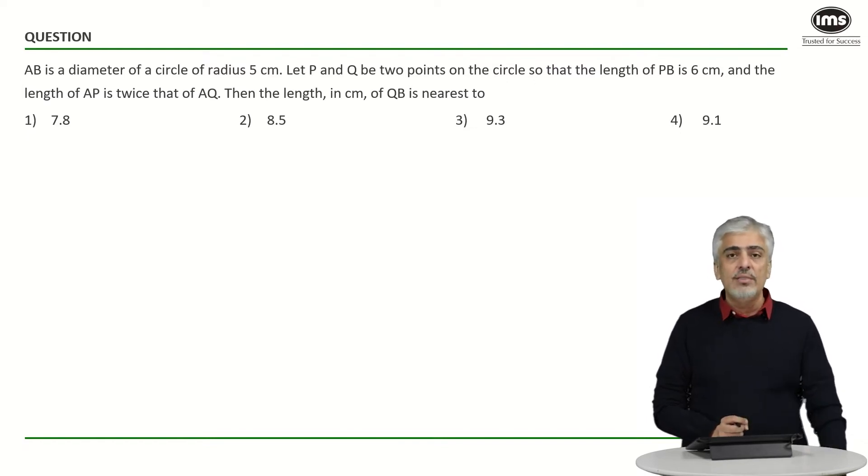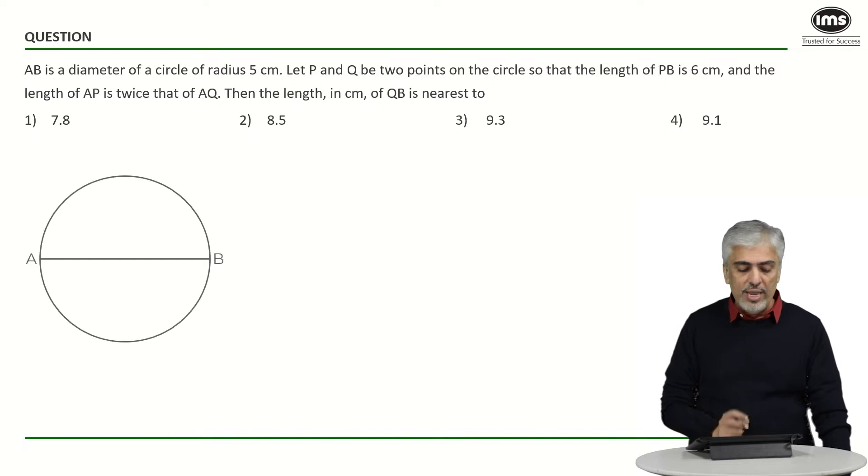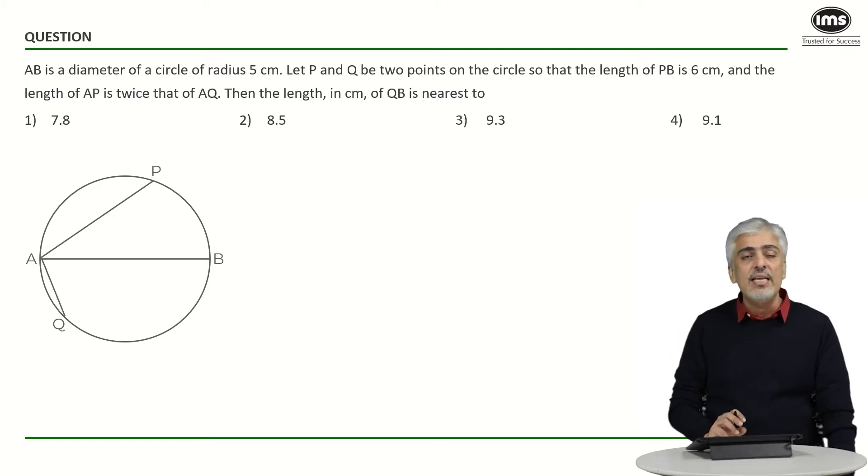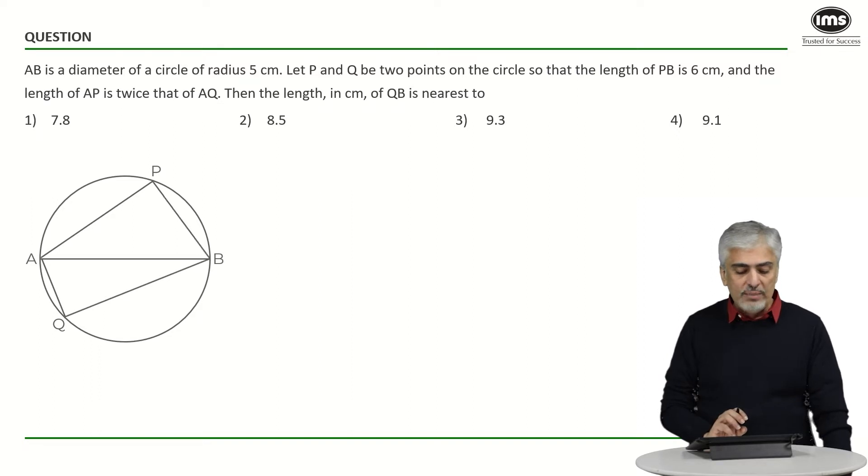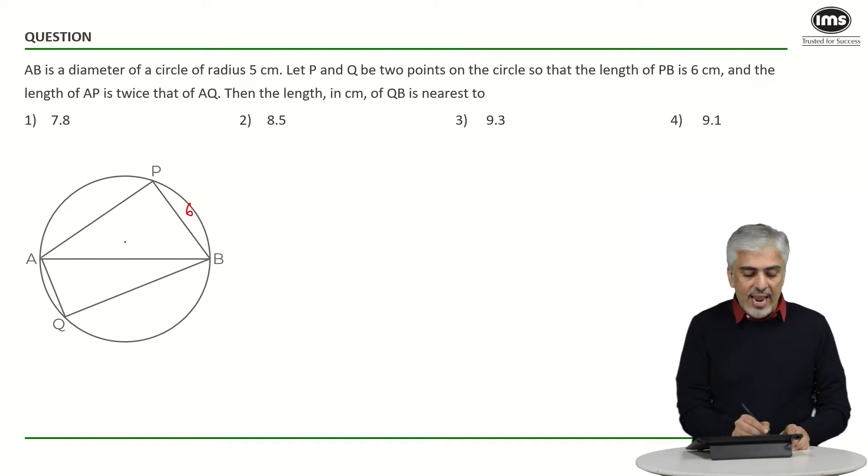Then the length in centimeters of QB is nearest which value. Let us have a look at the diagram. We have a circle with diameter AB. P is any point in the circle, just take a random point, and Q is also another point in the circle. AP is double of AQ, and they have told us PB is 6. So PB is 6 and I know AB is 10.